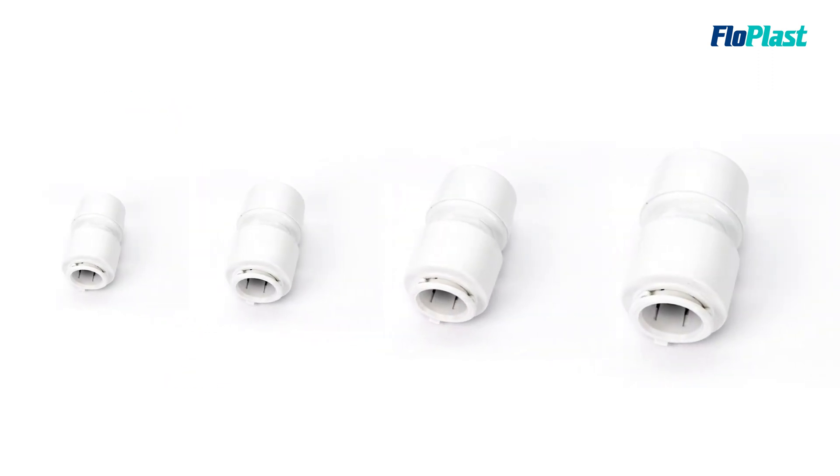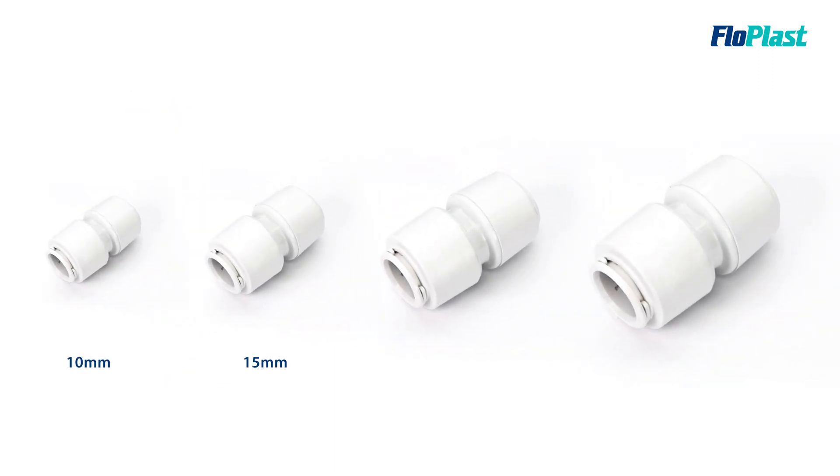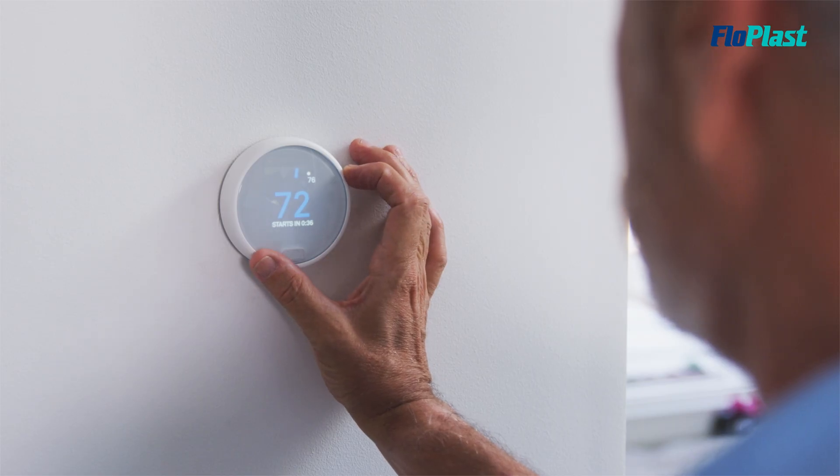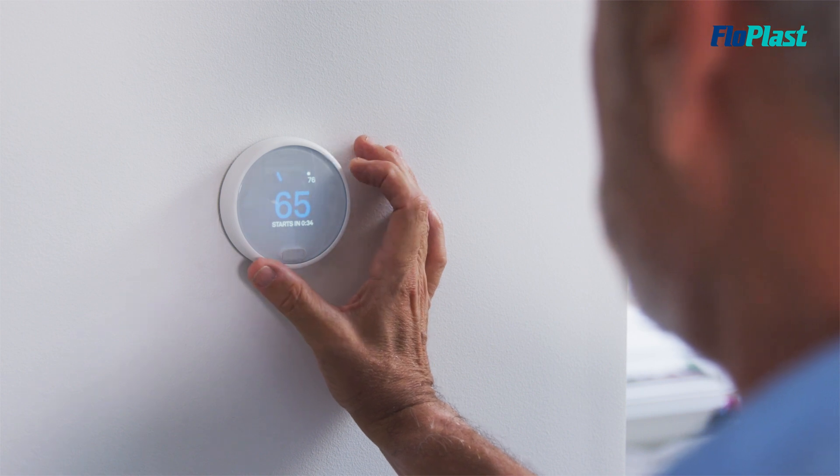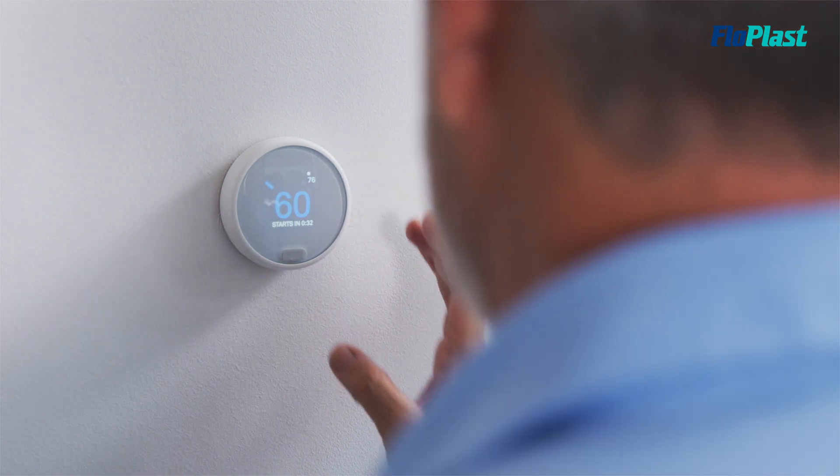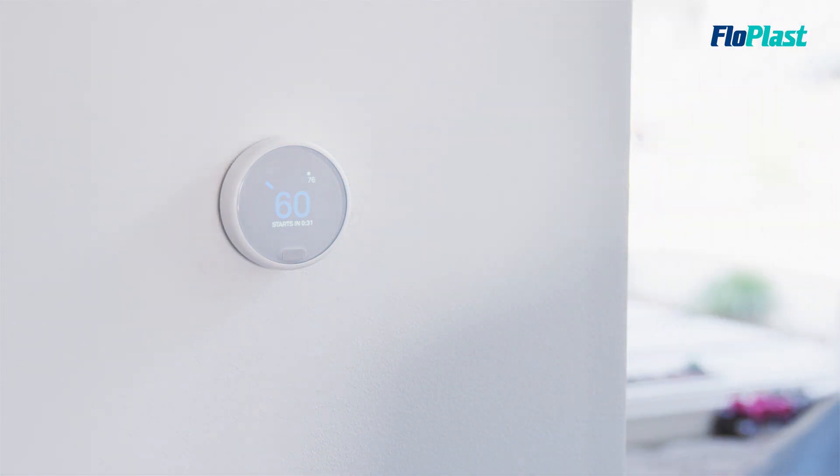The fittings and pipe are available in 4 sizes: 10, 15, 22 and 28mm. Flowfit Plus is suitable for both domestic and small commercial hot and cold water installations, including central heating systems for both pressurised, unvented and combi vented systems.